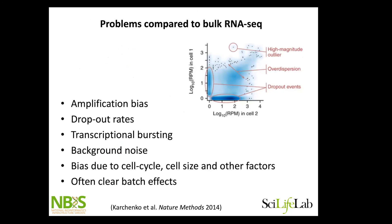For those who work with bulk RNA-seq, you will realize there are a lot of additional problems when you start with single-cell RNA-seq. We have amplification bias, dropout rates, and transcriptional bursting. So when you compare two cells of the same cell type, the highly expressed genes are often highly expressed in both cells, but you always have many genes detected in one cell but not the other. You have a lot of dispersion, outliers detected in only one cell, background noise, bias due to cell cycle and cell size, and quite often clear batch effects in single-cell RNA-seq.